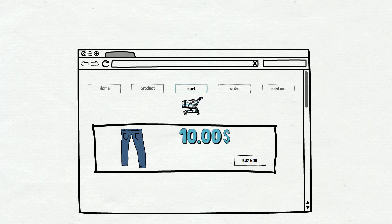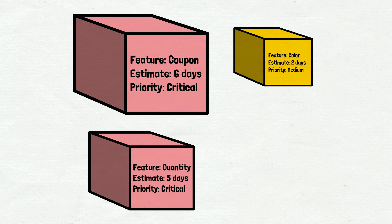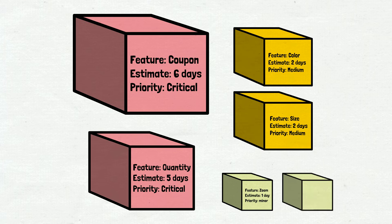Let's say we have a website — an internet shop — with five pages where users are able to find and buy products. There are plans to develop new features to improve the user experience on the product card page. There are features that are difficult to implement — for example, a user must be able to use a coupon — and their development will take 5–6 days, with the highest priority. There are two medium-priority features, such as changing color or size of a product, each taking 2 days. And two low-priority features — zooming in or viewing more photos — each taking 1 day. In total, 6 features with development taking 3–4 weeks.